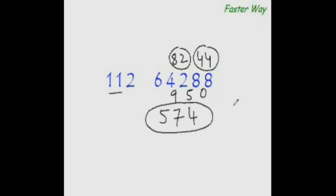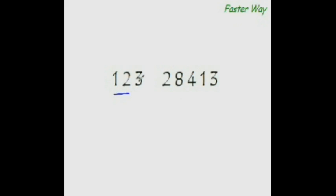This way you can break any 3-digit divisor into manageable numbers, but you must know the table of your main divisor. Now take the first two digits as your main divisor and keep 3 as your unused digit. 12 goes into 28 two times — 12 times 2 is 24 — so write 2 here and the remainder is 4. Our new dividend would be 44 minus 3 times 2, which is 6, so 44 minus 6 is 38. 12 goes into 38 three times — 12 times 3 is 36 — so write 3 here and the remainder is 2.